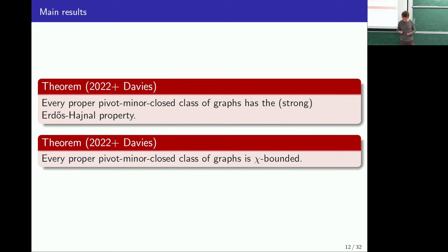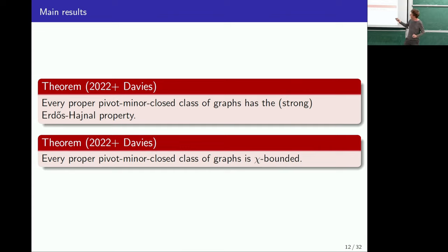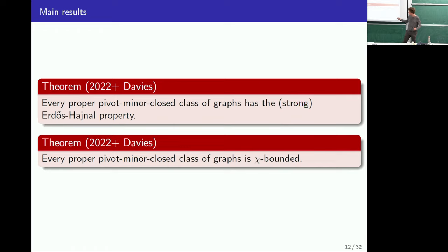The two new structural results for pivot minors I want to talk about today are: if you have a proper pivot minor closed class of graphs — the same as forbidding something as a pivot minor — then you have the Erdős-Hajnal property, or actually the strong Erdős-Hajnal property, and you are also chi-bounded. I'll start off with discussing the Erdős-Hajnal property.